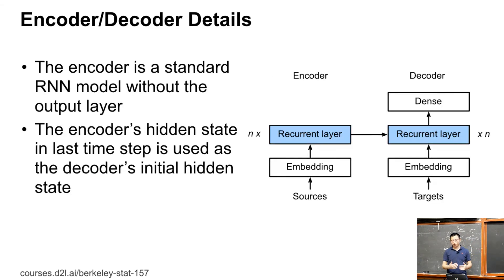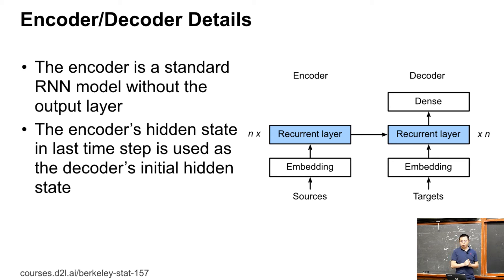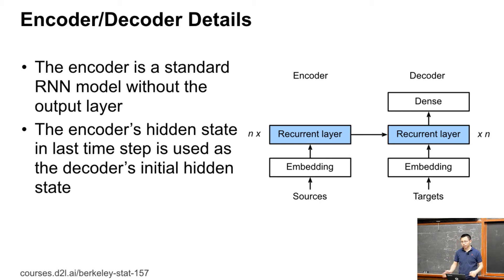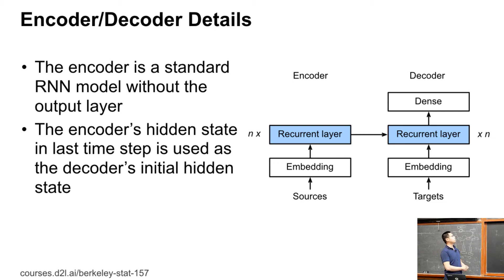Let's look at what the encoder and decoder architecture looks like. The encoder tokens are fed into an embedding layer to get embeddings, then passed through recurrent networks like LSTM layers or GRU layers. Each layer in the encoder passes its hidden state at the last time step into the decoder, meaning the decoder has the same number of recurrent layers and the same hidden size. The only difference is that the decoder has a dense layer which maps the output of the recurrent layer to the token we want to predict.